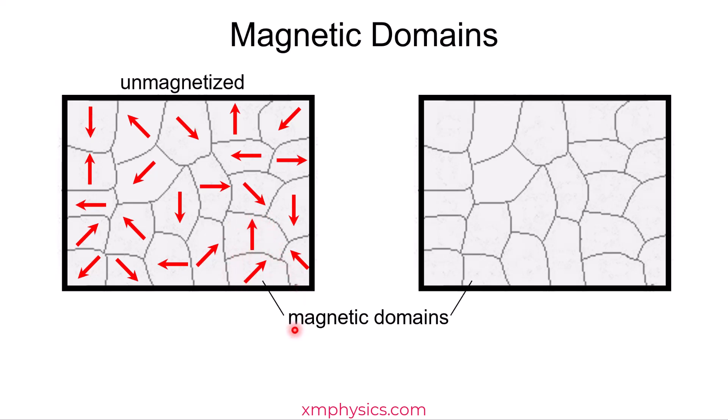So every group is called a magnetic domain. But because the magnetic field of every domain is pointing randomly in all directions, they all sum up to zero. So overall, as a nail, the nail has no magnetic field.